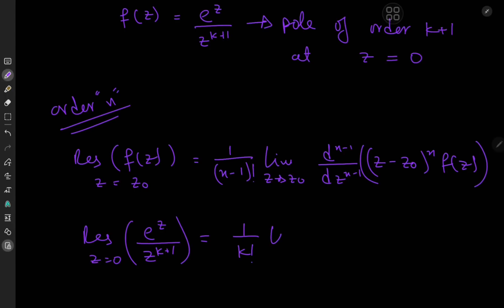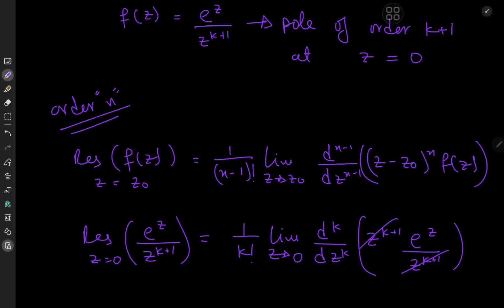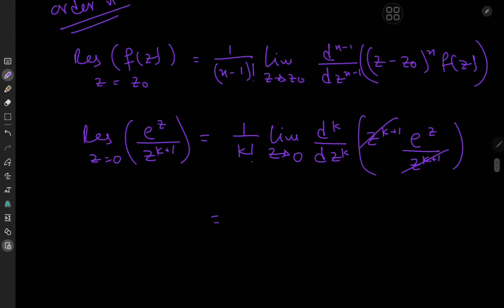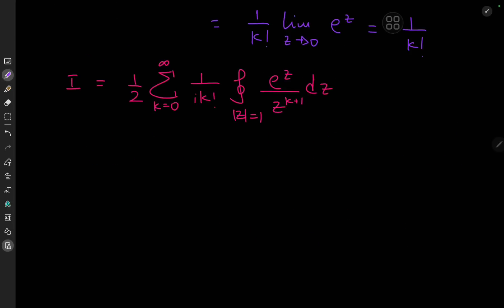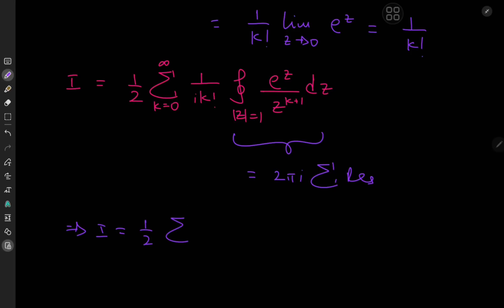In our case, we have a pole of order k plus one of the function e to the z divided by z to the k plus one at z equals zero, so we need one over k factorial times the limit as z tends to zero of the kth order derivative of z to the k plus one times e to the z divided by z to the k plus one. There's cancellation, and the kth order derivative of e to the z is just e to the z, leaving one over k factorial times the limit as z tends to zero of e to the z, which equals one. So the residue is one over k factorial. Applying the residue theorem, the contour integral equals two pi i times the residue, giving i equals one half the sum over k of one over i times k factorial times two pi i times one over k factorial.